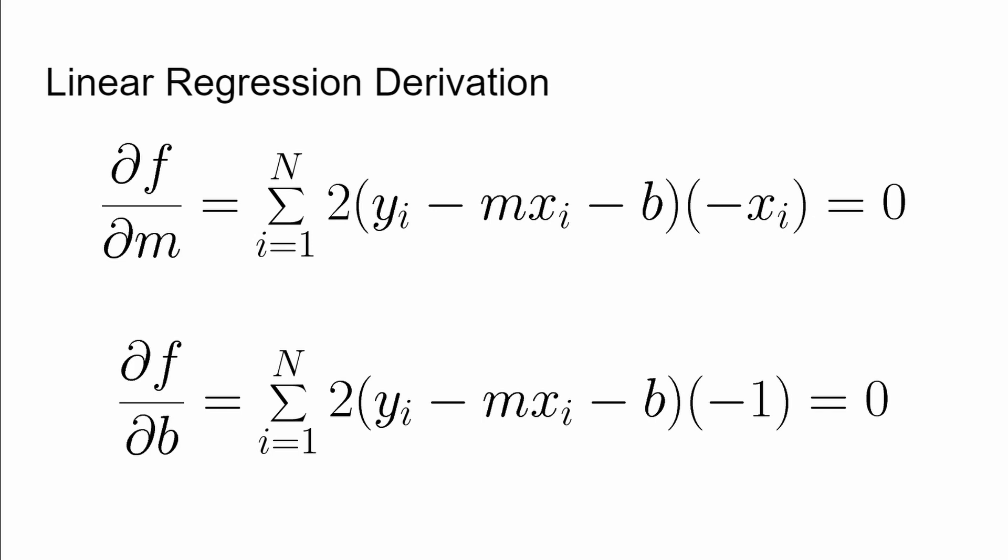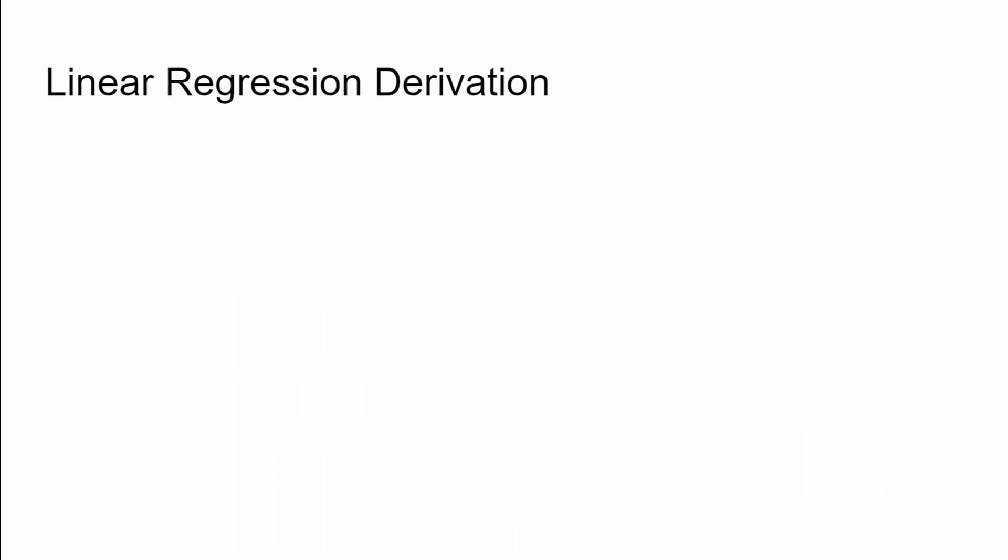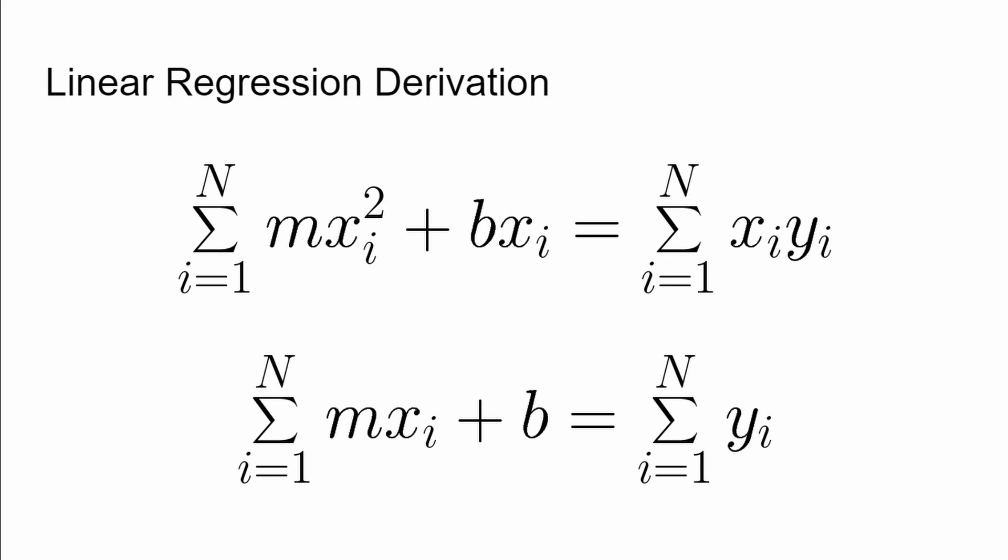Famous last words, right? It's just algebra. Anyway, we can divide out that two since it's common to both equations and distribute through the minus signs. And then we can collect all the known terms and move them to the right-hand side, that is, anything that doesn't have an m and a b in it.